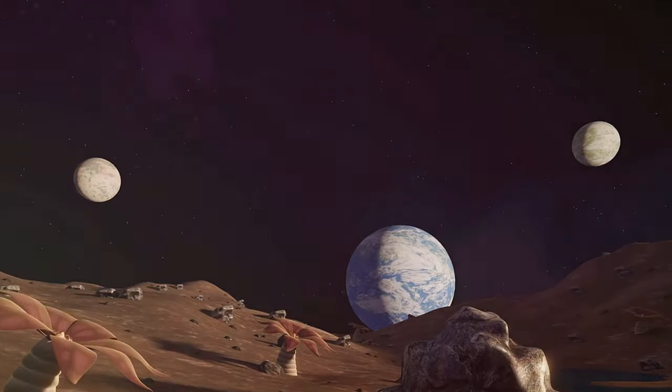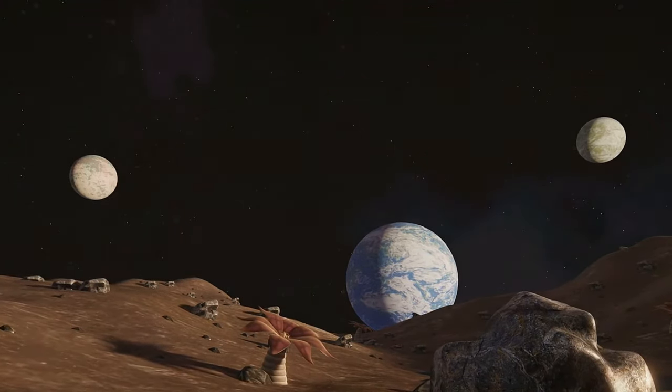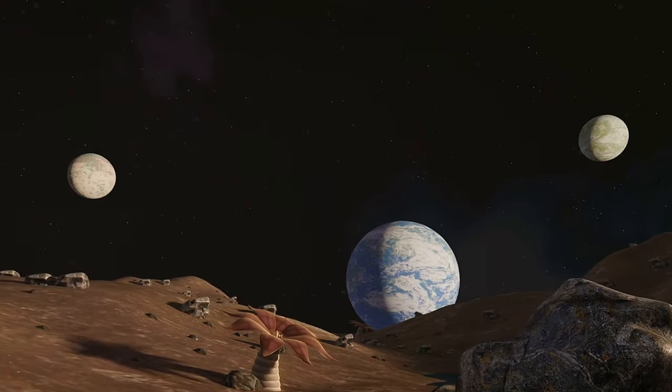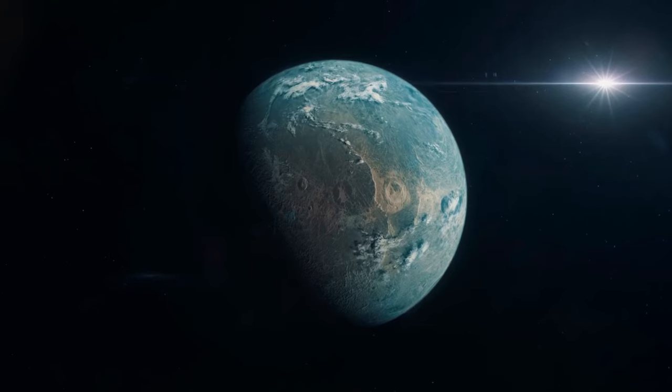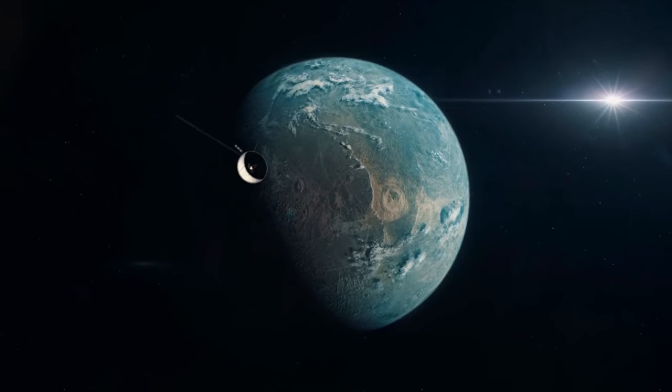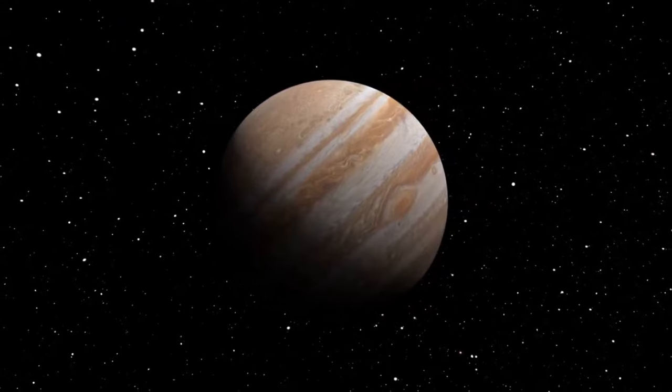Take the TRAPPIST-1 system, for instance. Located a mere 40 light-years away, this system hosts seven Earth-sized planets, three of which are in the habitable zone. It's a tantalizing prospect for astrobiologists and space enthusiasts alike, a symbol of the limitless potential of the universe.